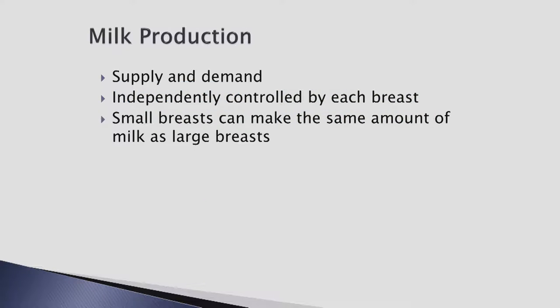Milk production is controlled by supply and demand. The more the infant feeds, the more the demand, the greater the supply. It is important to note that although women have two breasts, they function independently. Each serves the same purpose, yet one may be more efficient than the other. Mothers may comment that they get more milk from one breast — this is not unusual. Small breasts can make the same amount of milk as large breasts over the course of a day. The size has nothing to do with glandular tissue; it is actually dependent on the amount of fat contained in the breast area.